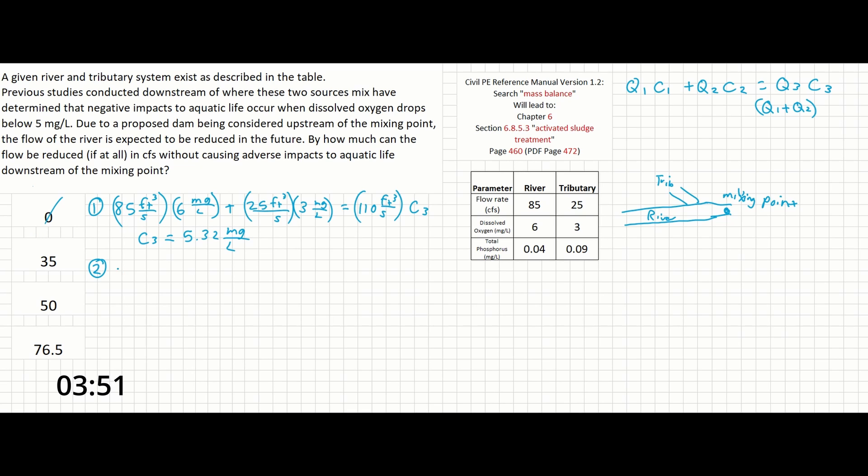Now we're going to say Q1 cubic feet per second times 6 mg per liter plus 25 cubic feet per second times 3 mg per liter.